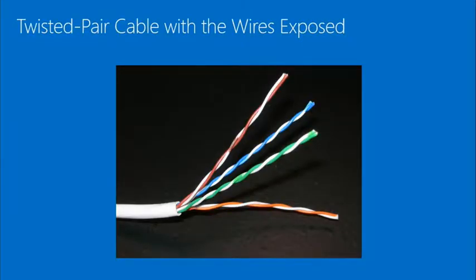We can see the four twisted pairs: blue, green, orange, and brown. Typically you're more used to seeing a jack on the end of this. All these wires are moved apart and separated, then shoved into the jack. You use tools to crimp that down — we'll talk about those tools in a minute.